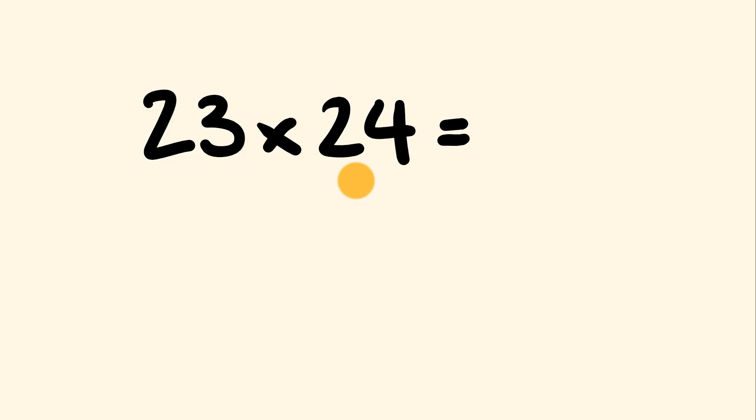So the way this trick works is as follows. The first thing we do is we look at the units here. We have for 23, 3 for the units, and for 24 we have 4. The first thing we do to get the first part of our answer is we add either 3 to 24 or 4 to 23. And when we do that, we get the following. 3 plus 24 is equal to 27. Now what we do is we multiply it by this tens value right here, either one. So 27 multiplied by 2 is 54. Now this is the tens part of our answer. So we multiply this by 10.